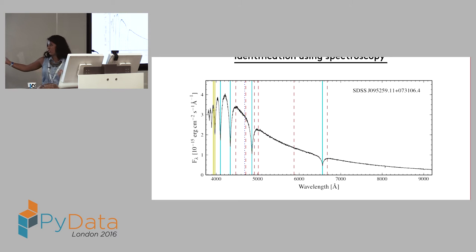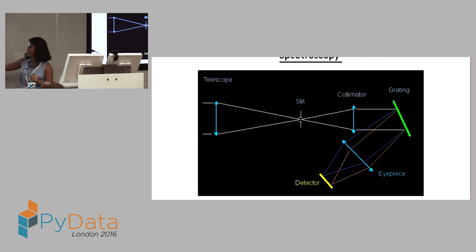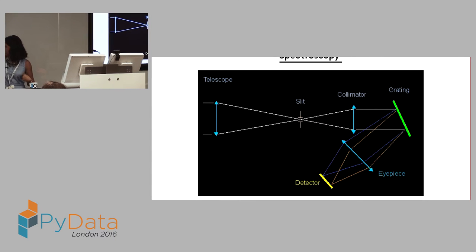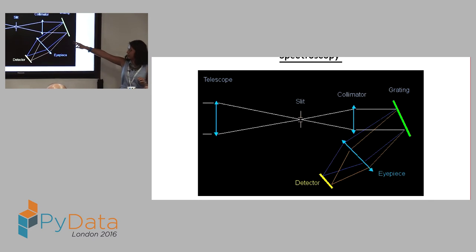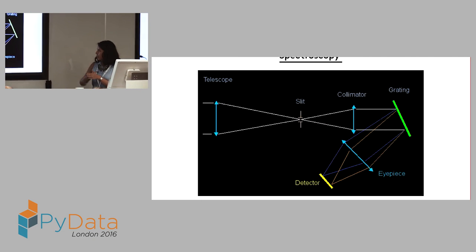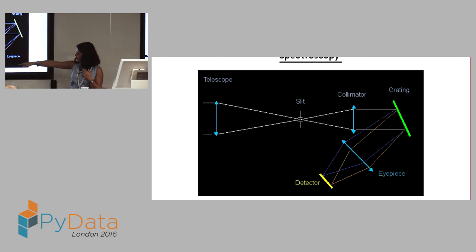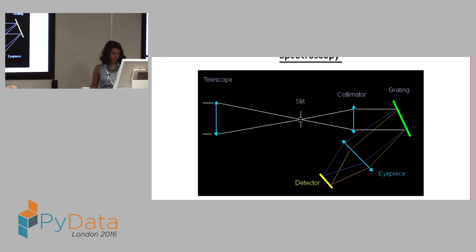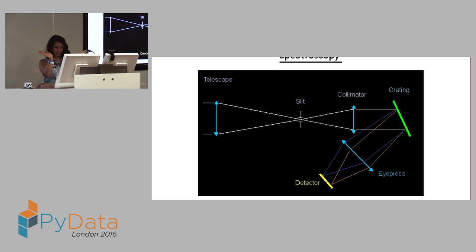This is what you look for if you're looking for a DA (hydrogen-rich) white dwarf. To quickly explain spectroscopy: you place an adjustable slit at the focal point of a telescope, use a collimator to get parallel rays, then a grating to disperse the light, and detect it with a detector — and that's what gives you the different wavelength ranges.